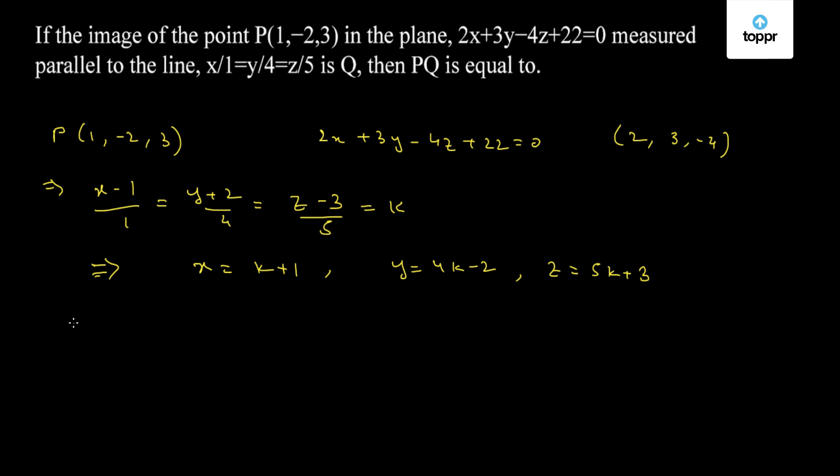Now since Q is the image of P along this line, then the point R lying on the plane P1 is the midpoint of PQ. Since Q is the image, the length PQ will be equal to twice the length PR.